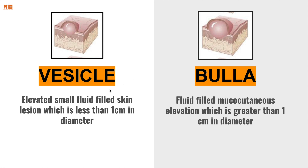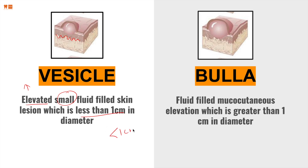Now we're getting into fluid-filled lesions. Vesicles are elevated, so they have vertical dimension — small, fluid-filled. By small, we mean less than one centimeter. They are fluid-filled skin lesions, meaning the basal layer has not been crossed. There is a chapter coming up in future lectures called vesiculobullous lesions, covering topics such as pemphigus, pemphigoid, and multiple other topics. A vesicle is less than one centimeter and fluid-filled with vertical dimension.